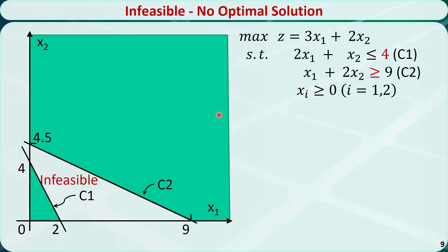In this example, the first constraint is still less-than-or-equal-to, but the right-hand side is changed to 4. The second constraint is a greater-than-or-equal-to constraint. The feasible region of c1 is below this line, and the feasible region of c2 is above this line. There is no intersection, so the feasible region is an empty set. The problem is infeasible, meaning there is no optimal solution.